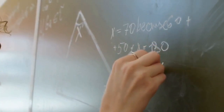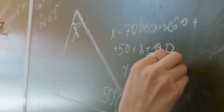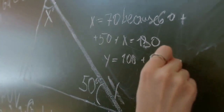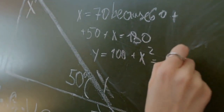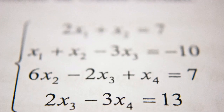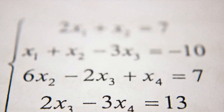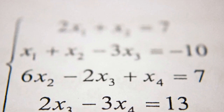x = (-b ± √(b² - 4ac)) / 2a. Calculate both roots by solving for x using the plus and minus signs.